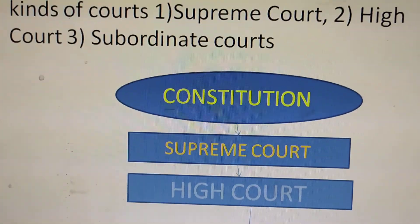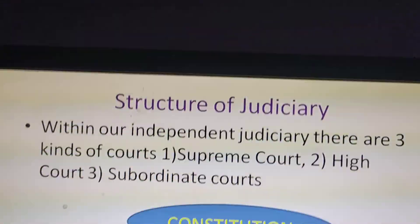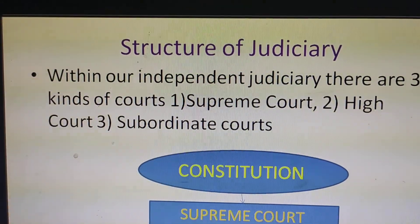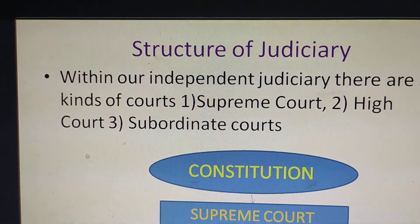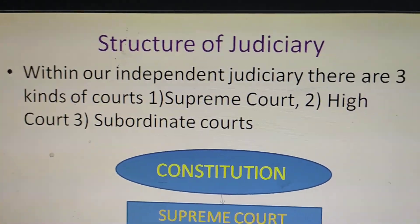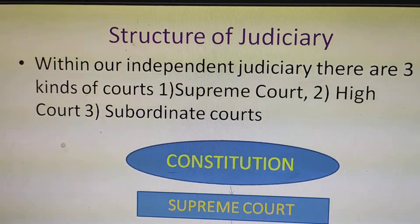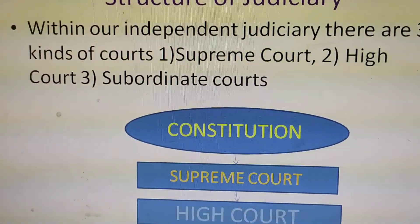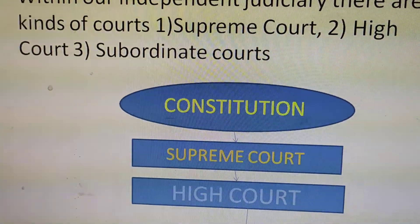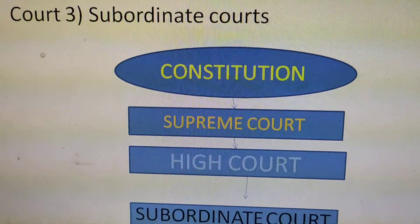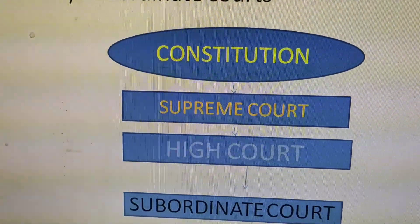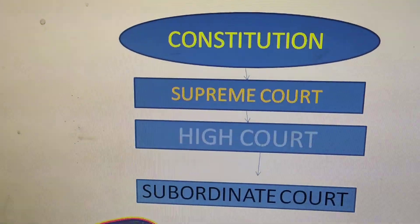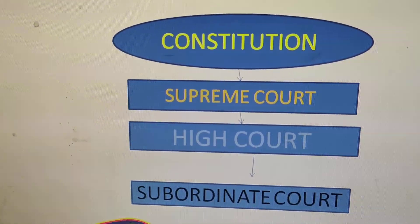In the structure of judiciary in India, there are mainly three types of courts. The first is the Supreme Court, the second is the High Court, and the third is the subordinate courts. The constitution is the main basis for all the courts, with the Supreme Court at the top, followed by the High Court, and finally the subordinate courts at the bottom of the hierarchy.